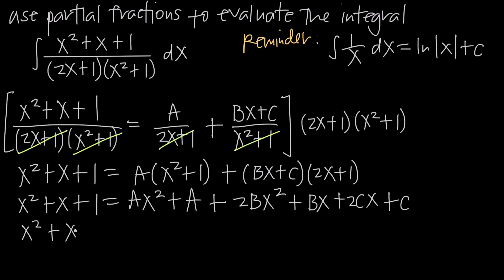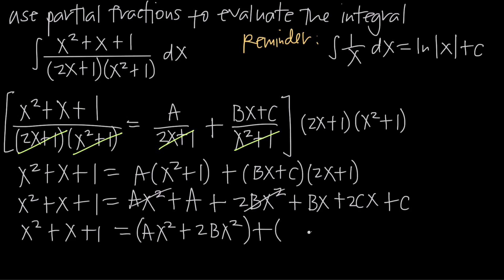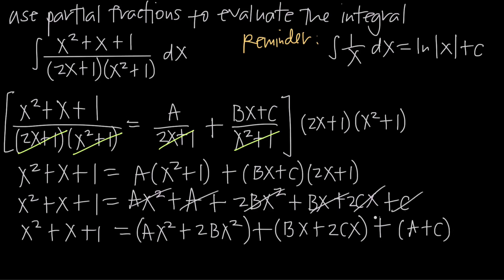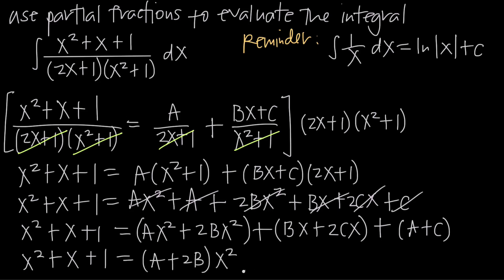Now we collect like terms. We take all x squared terms together: Ax squared plus 2Bx squared. Then all x terms: Bx plus 2Cx. Then we group constants: A plus C. We factor out x squared from the first group to get A plus 2B times x squared, factor out x from the second group to get B plus 2C times x, and leave our constants A plus C as they are.